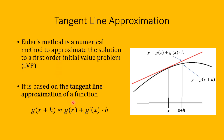If you have a function g and g is differentiable, then it turns out that for small values of h, g of x plus h is approximately equal to g of x plus g prime of x times h, where g prime of x is the first derivative of g at x.